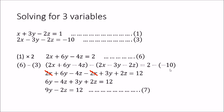Next, we take equations 1 and 3 and again eliminate x. Since the coefficient of x in equation 3 is 2, we multiply equation 1 by 2 to get 2x + 6y - 4z = 2 (equation 6). We subtract equation 3 from equation 6: 2x + 6y - 4z - (2x + 3y + 2z) = 2 - (-10). The x terms cancel, and simplifying gives us equation 7: 9y - 2z = 12.